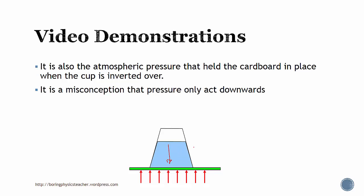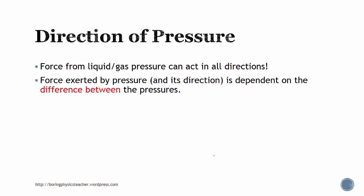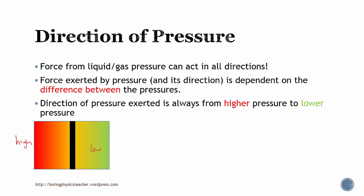It is a misconception that pressure only acts downwards. In fact, atmospheric pressure can act upwards or sideways. The direction of pressure for fluid can act in all directions. What determines the pressure is that it's dependent on the difference between the pressures. If one side is high pressure and the other is low pressure, the direction of pressure will be from high to low.